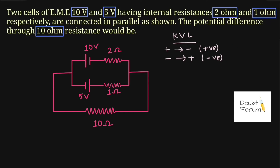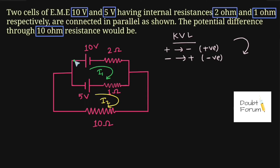We will move in the clockwise direction. Applying KVL in the first loop: I am marking the current i1 flowing in this loop in the clockwise direction. Because there are two loops, I also mark i2 as the current flowing in the second loop. Starting from this point and moving clockwise, we will come back to this point.